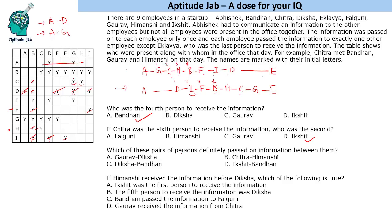Which of these pairs of persons definitely passed on information between them? Gaurav and Diksha — no, they are not connected. Chitra and Himanshi — yes, Chitra and Himanshi are connected to each other, so that must be the answer. Diksha and Bandhan — no connection. Ikshet and Bandhan — also no connection.